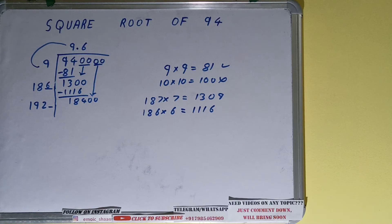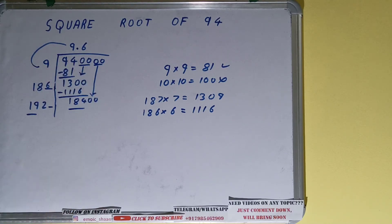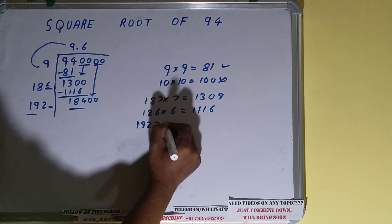So it will be 1840. Now compare this and this. So 19 ten times is 190, 19 nine times is 171, so we can try seven times. 1927 into 7 we can try.